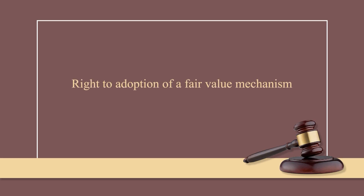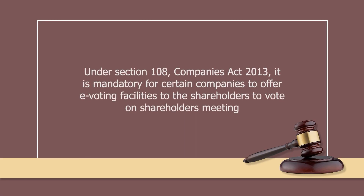Now comes the right to adoption of a fair valuation mechanism. In order to evaluate the value of a company's shares, the company should adopt an independent valuation mechanism to safeguard minority interests. In order to ensure that the shareholders are entitled to approach the company law tribunal if the process appears unfair, the audit committee appoints the independent valuer and the committee should take the necessary measures. Talking about the e-voting process: under Section 108 of the Companies Act 2013, it is mandatory for certain companies to offer e-voting facilities to the shareholders to vote on shareholders meetings. This provision has permitted the minority shareholders, whether staying in the country or outside, to exercise their voting rights without having to cast a vote in person. This has caused the participation of minority shareholders in meetings to rise and enables them to express their opinion on major business issues.